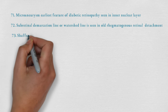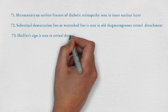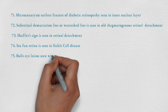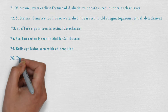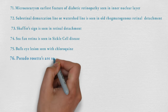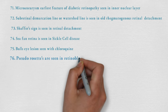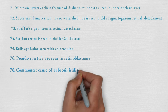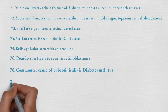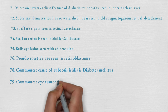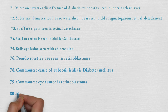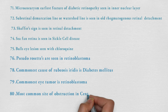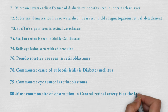Subretinal demarcation line or watershed line is seen in old rhegmatogenous retinal detachment. Shafer's sign is seen in retinal detachment. Sea-fan retina is seen in sickle cell disease. Bull's eye lesion is seen with chloroquine. Pseudorosettes are seen in retinoblastoma. Commonest cause of rubeosis iridis is diabetes mellitus. Commonest eye tumor is retinoblastoma. Most common site of obstruction in retinal artery is at lamina cribrosa.